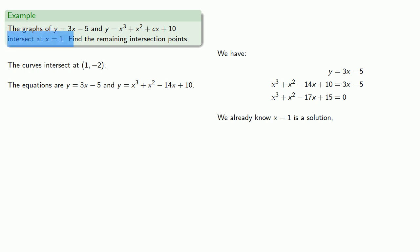But let's take advantage of the fact that we already know that x equals 1 is a solution, because we know the two graphs intersect at x equals 1. And because we know x equals 1 is a solution, we know that x minus 1 is a factor.